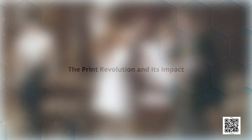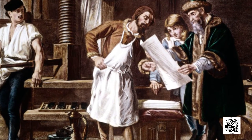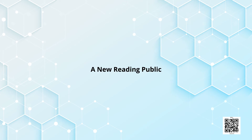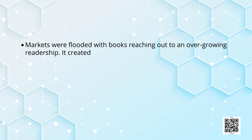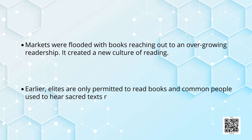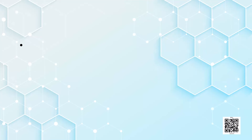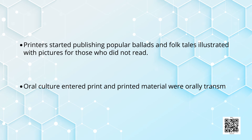The shift from hand printing to mechanical printing led to the print revolution. Print revolution was not only a new way of producing books — it transformed the lives of people, changing their relationship to information, knowledge, and institutions. A new reading public emerged. The cost of books was reduced, markets were flooded with books reaching an ever-growing readership, and it created a new culture of reading. Earlier, elites were the only ones permitted to read books and common people heard sacred texts read aloud. Printers started publishing popular ballads and folk tales illustrated with pictures for those who did not read. Oral culture entered print and printed material was orally transmitted.